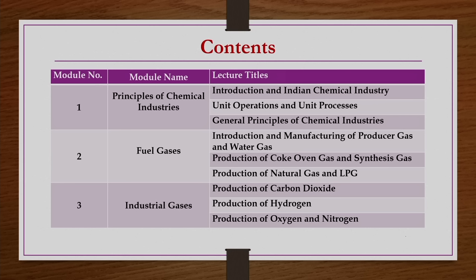Looking at the detailed course contents: In the first week, we have principles of chemical industries — basics, introduction to unit operations and unit processes, and general principles of chemical industries. Second week we will be discussing fuel gases production like production of producer gas, water gas, coke oven gas, synthesis gas, natural gas, etc. Third week we will be discussing production of industrial gases such as carbon dioxide, hydrogen, oxygen, and nitrogen, etc.